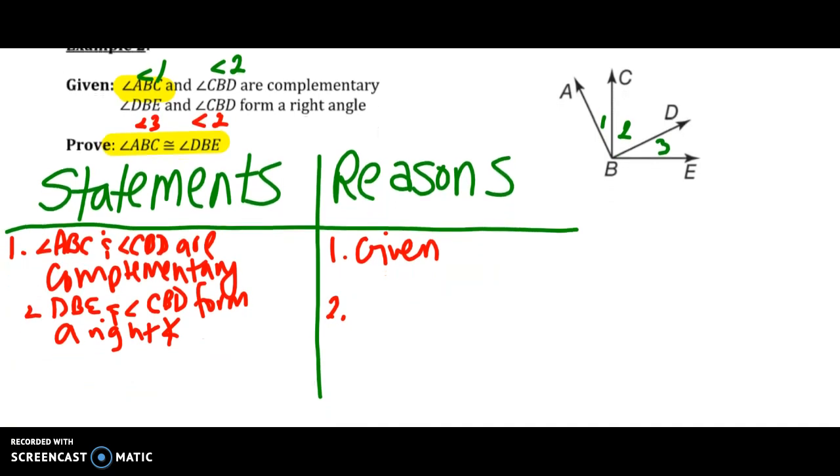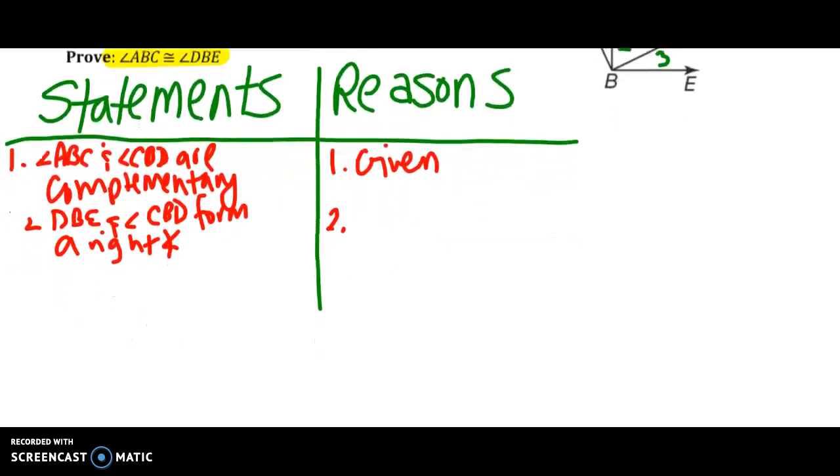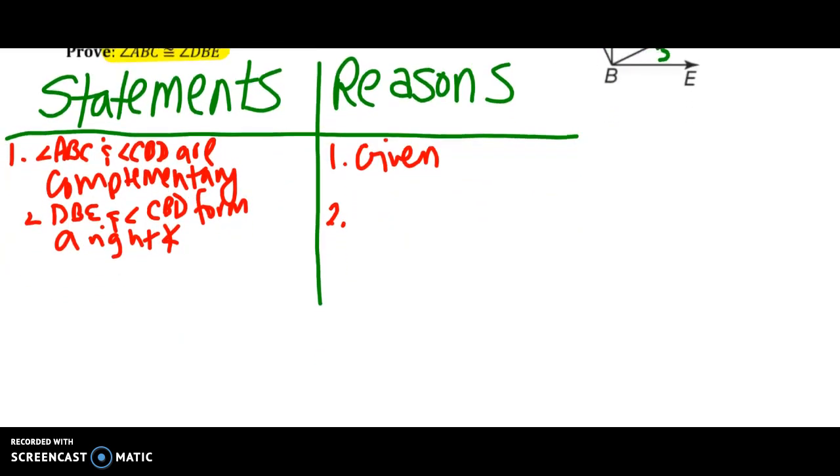I'm going to use the numbers from here on out rather than the names. From this first given statement, I know that angle 1 plus angle 2 equals 90 degrees, and that comes from the definition of complementary angles.